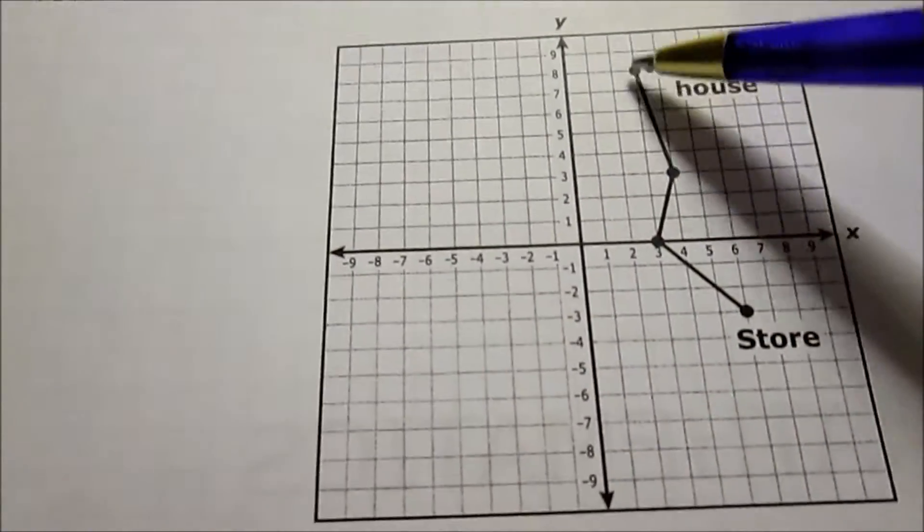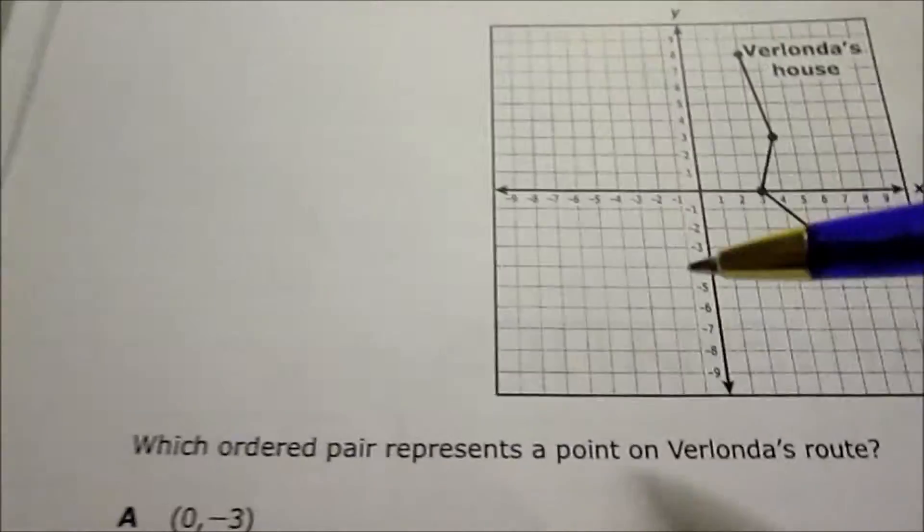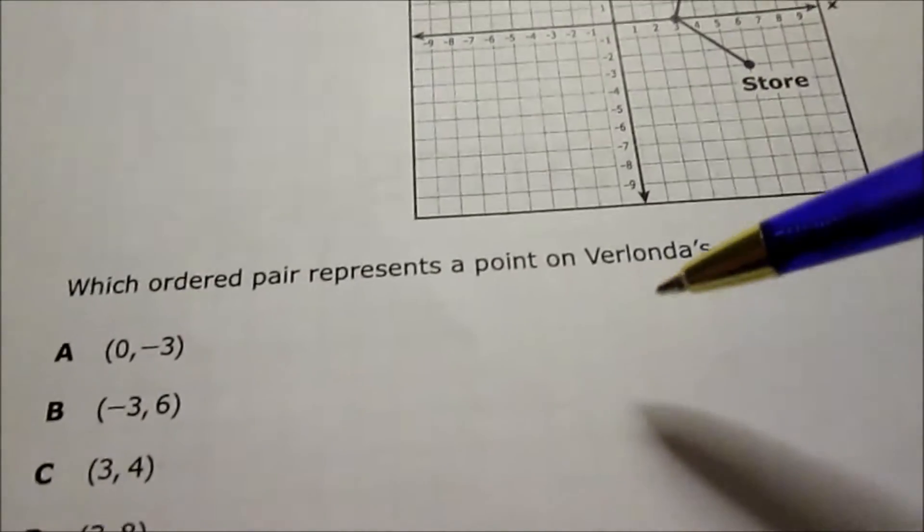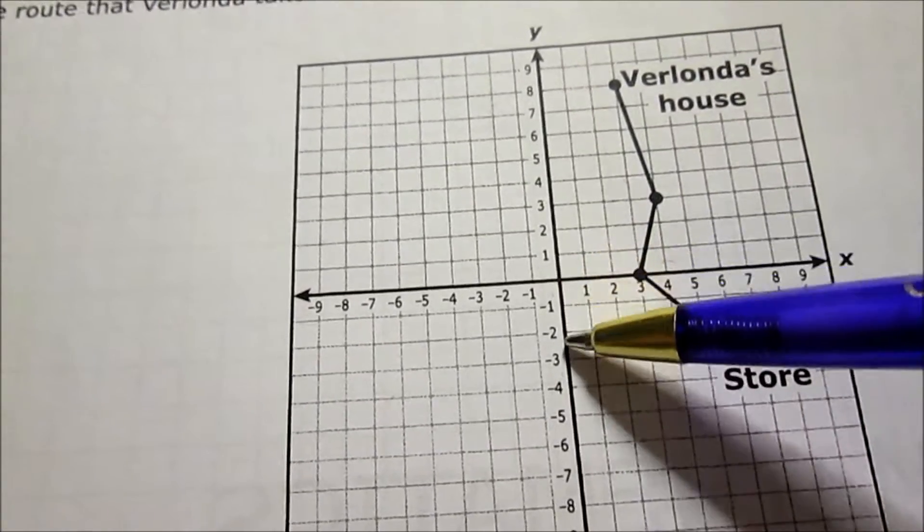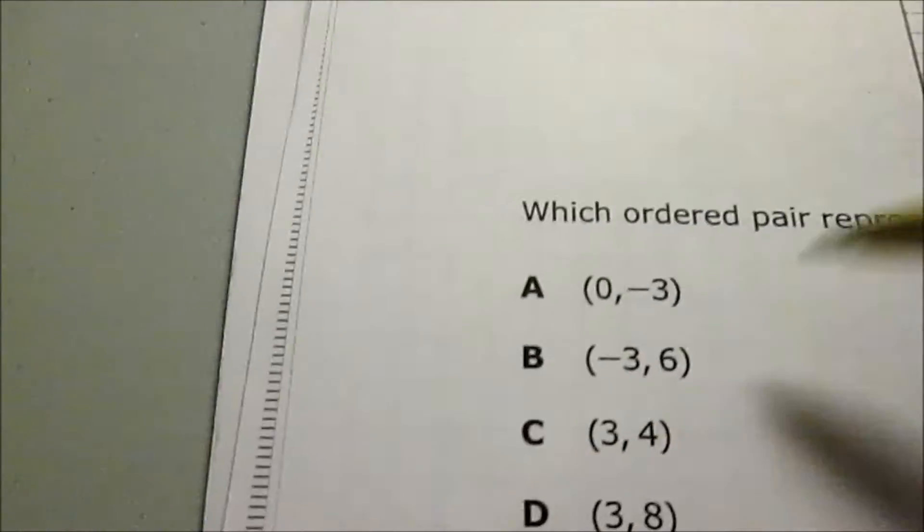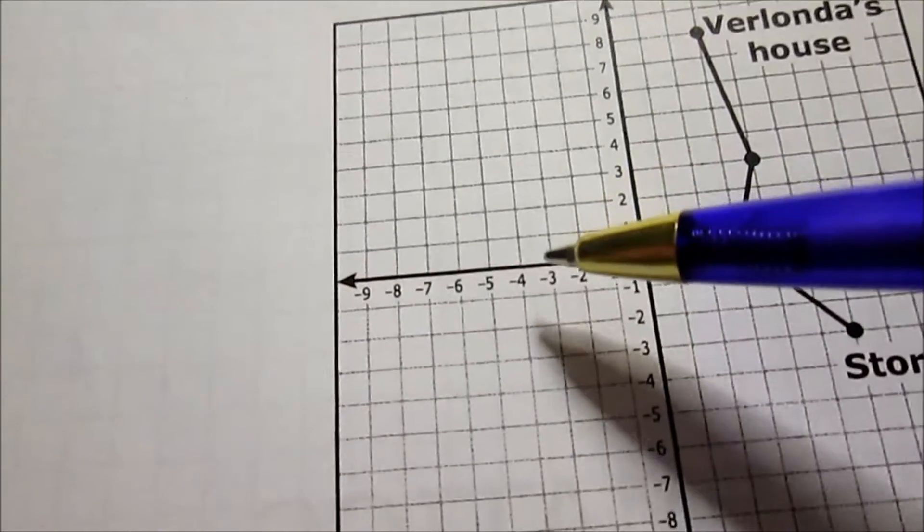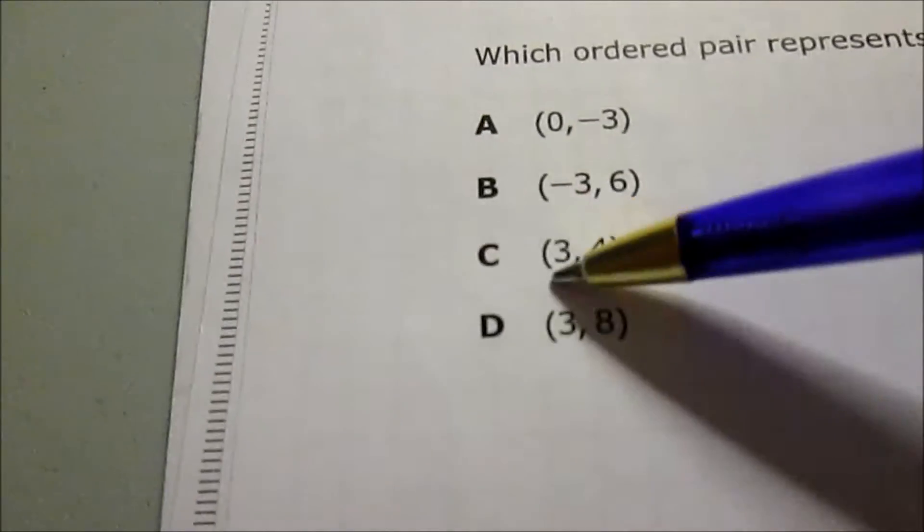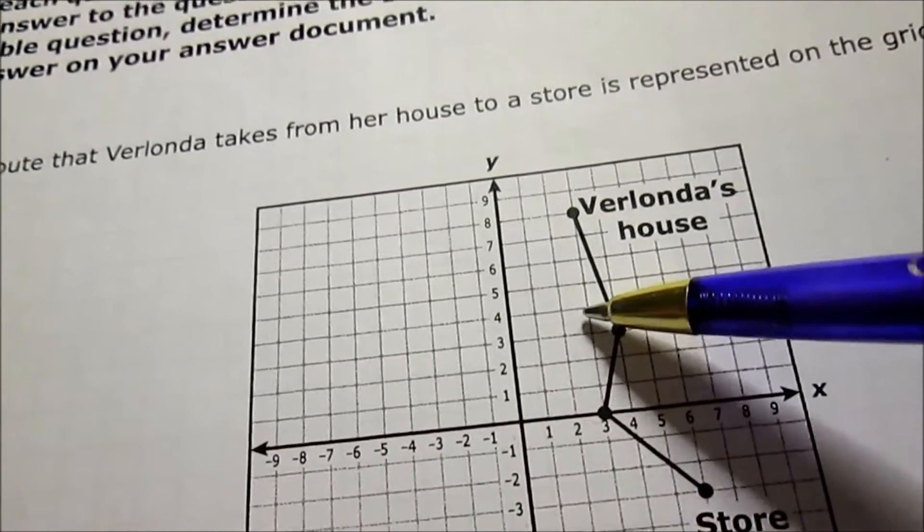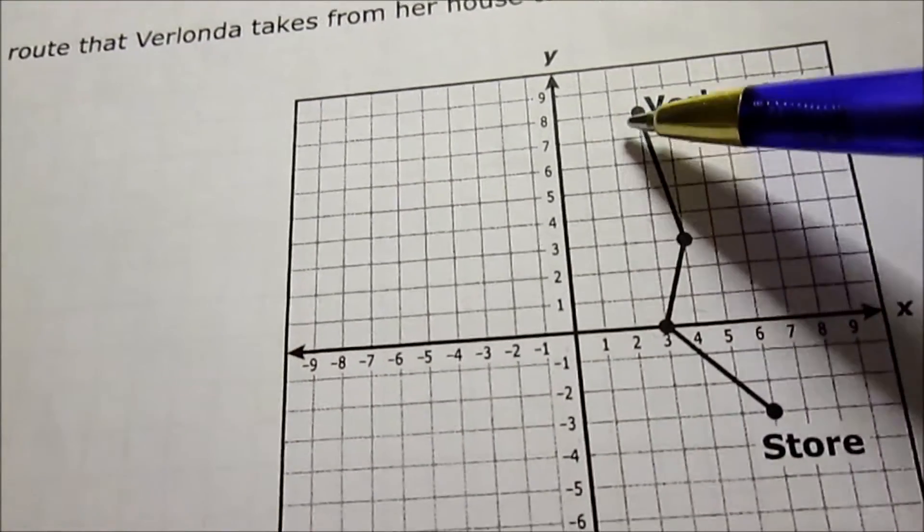This first one has a graph of a route and it says which ordered pair represents a point on the route. I look through each of these, I try to find the one that's on here. (0, -3): 0 is here, then go down to negative 3, not on the route. (-3, 6): negative 3 is the X, then 6 is the Y, go up here, that's nowhere near the route. (3, 4): go over to 3, then up 4, close but not it. (3, 8): go over to 3 and up 8, that's on the route. That means answer choice is D.